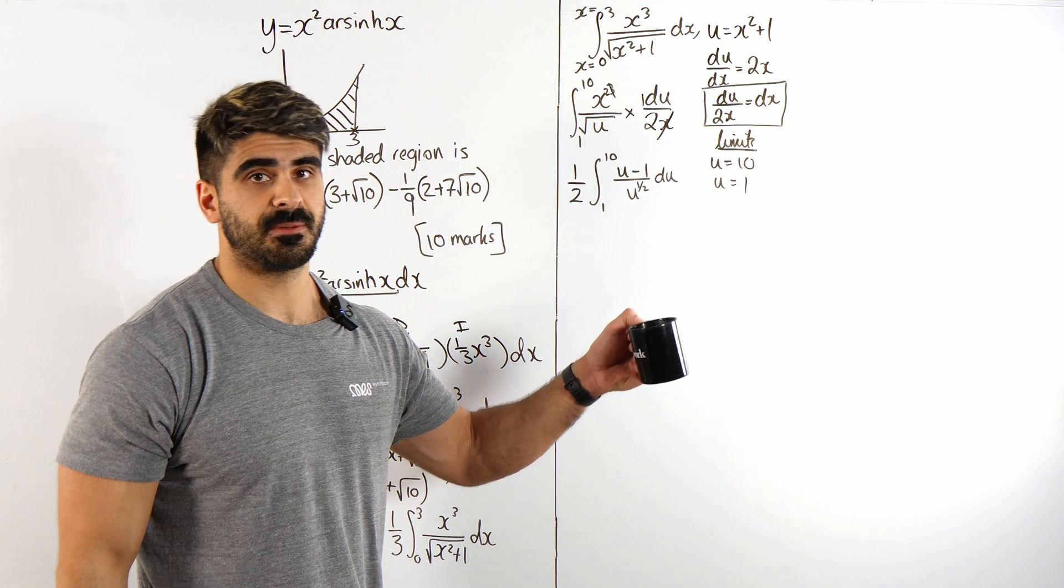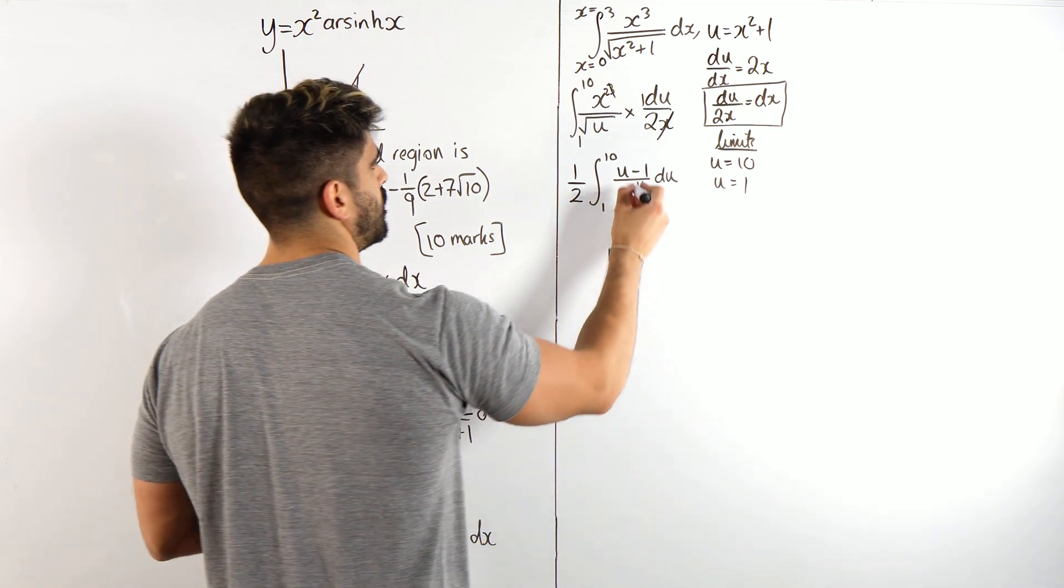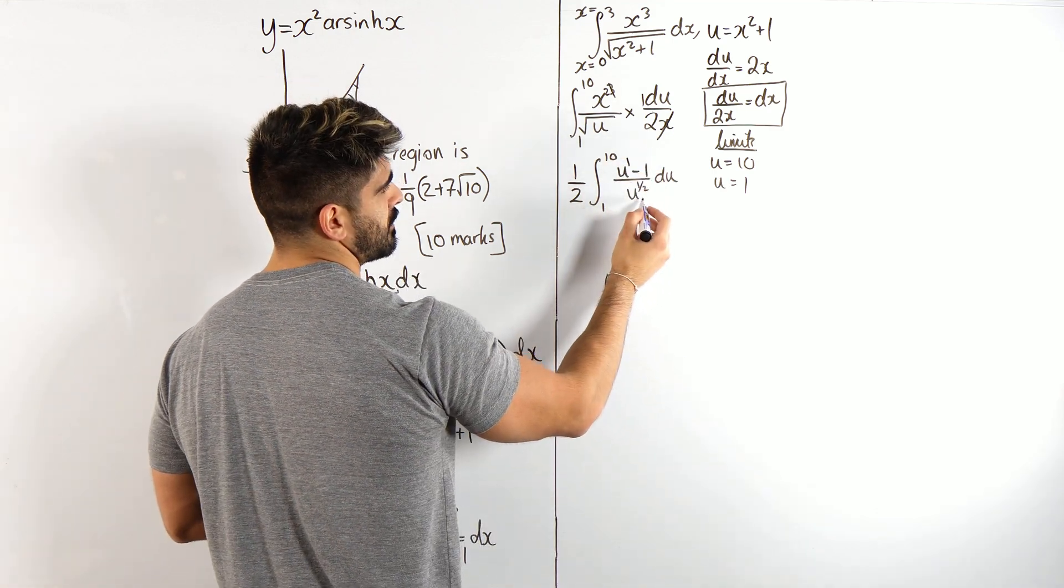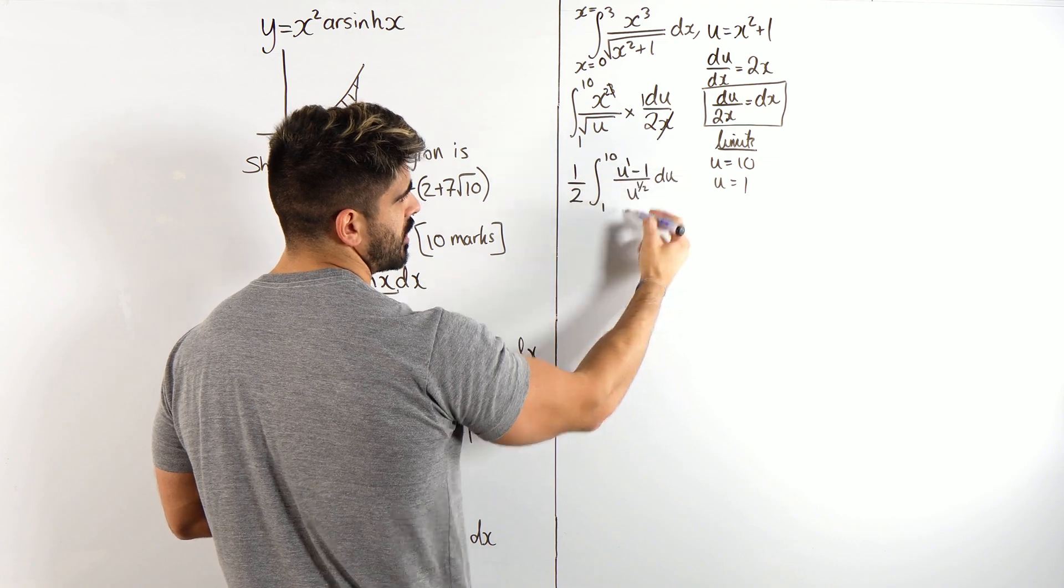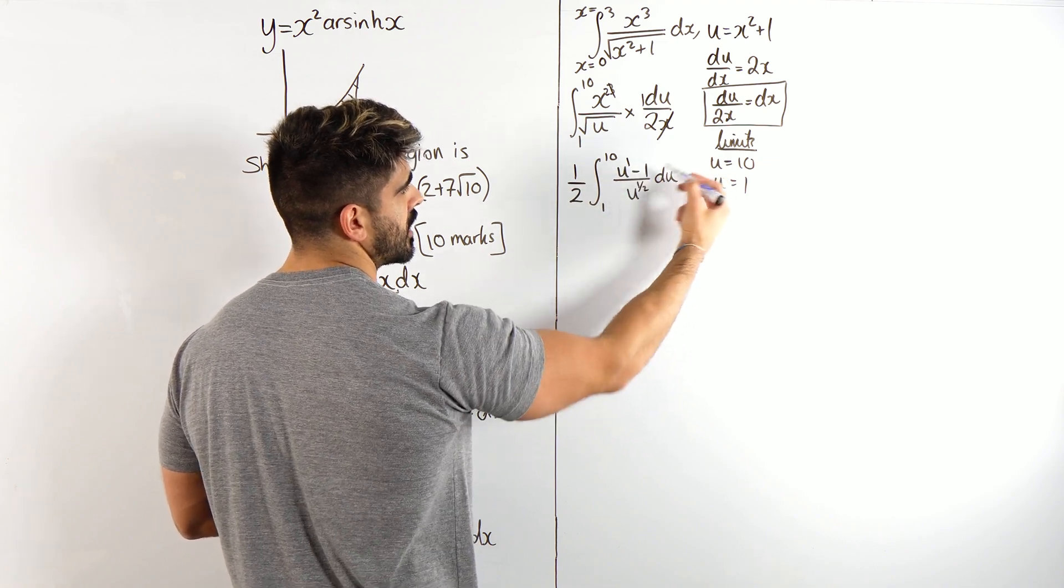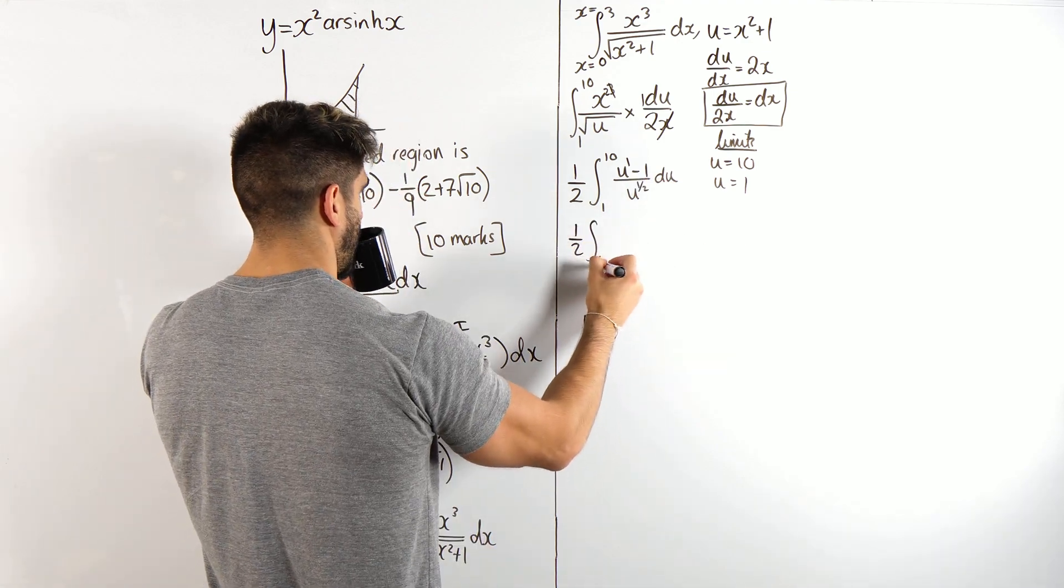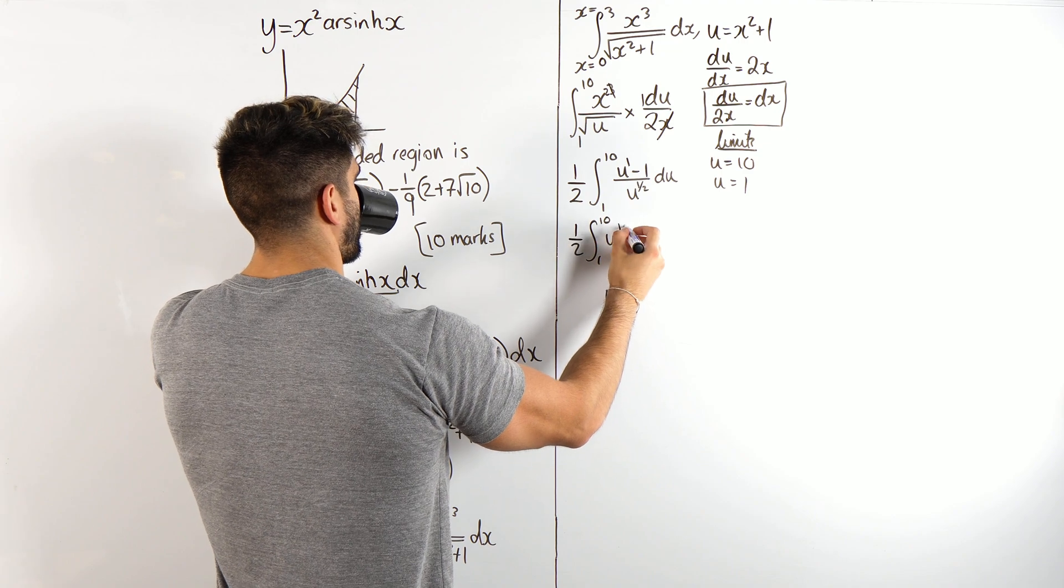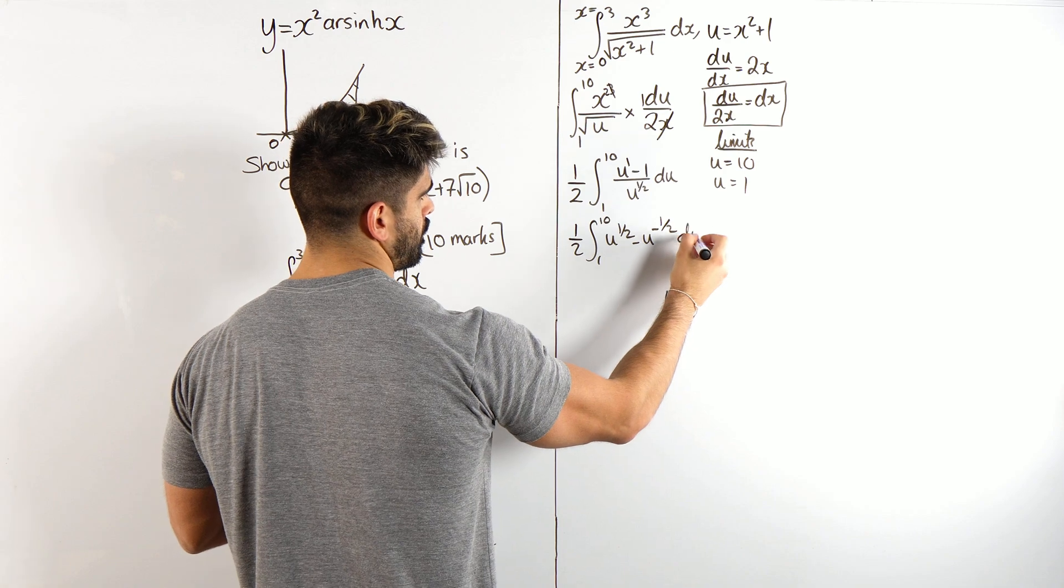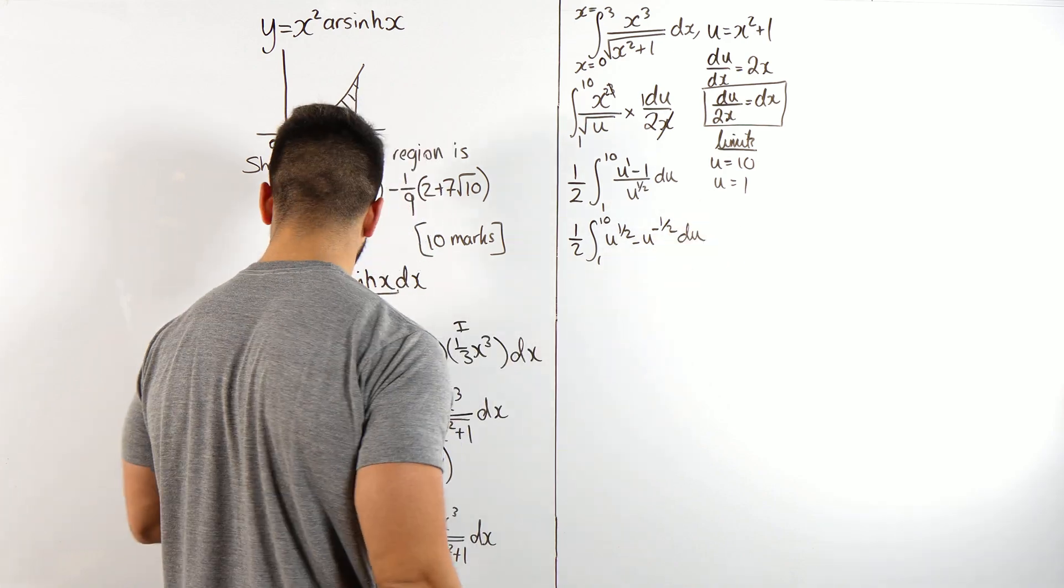How do we integrate that? We split the fraction, innit? So, we're going to have u to the 1 divided by u to the half, we take away the powers, and here we just get 1 over u to the half, we're going to bring that up to make it u to the minus half. So, we get this, okay?